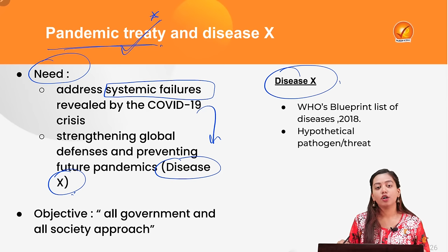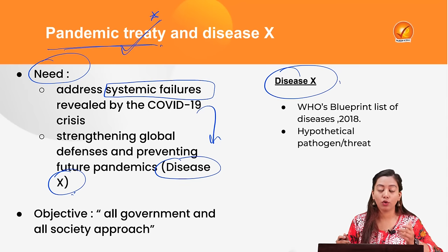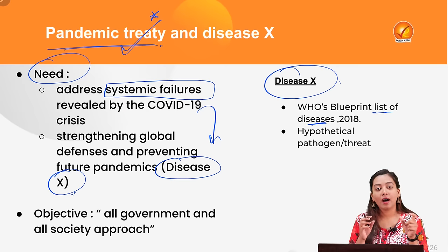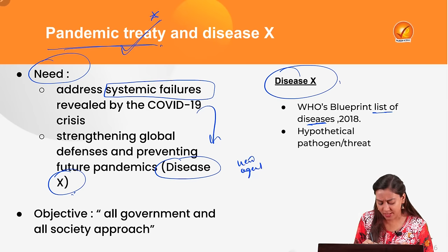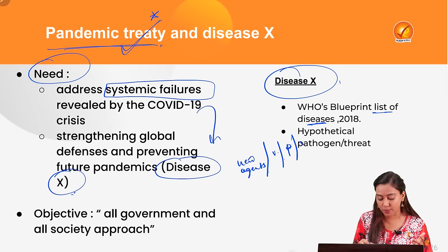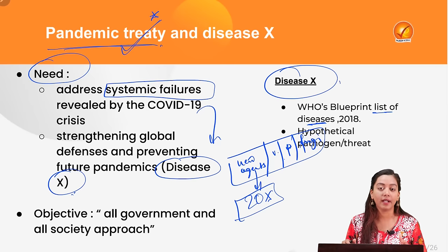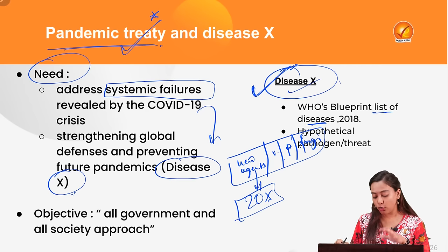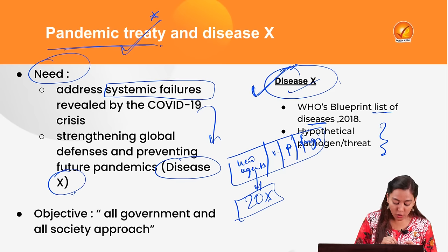Back in 2018, WHO added a hypothetical disease called Disease X to its priority list. This could be caused by any new unknown agent — chemical, viral, pathogenic, or fungal. It is predicted to be about 20 times more deadly than COVID-19. WHO anticipated this possibility and called for global cooperation to deal with it. Disease X is a hypothetical pathogen and threat — it has not occurred yet, but WHO predicts it could emerge.